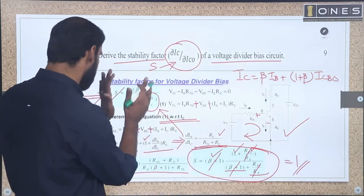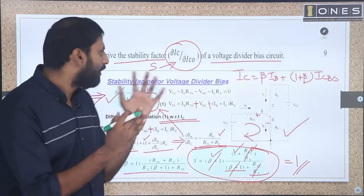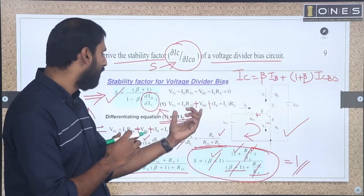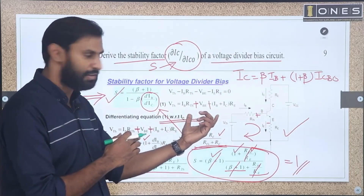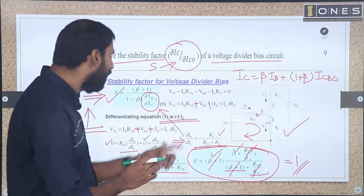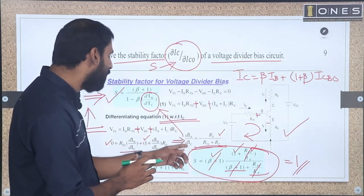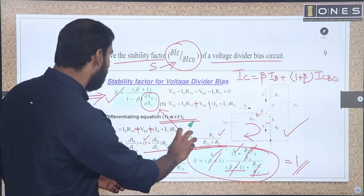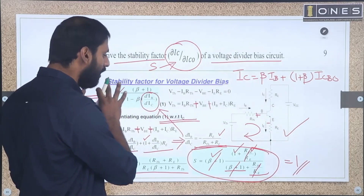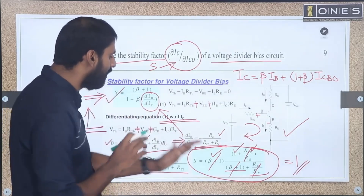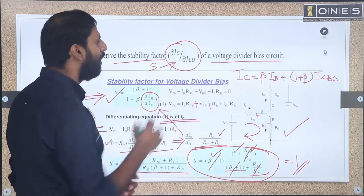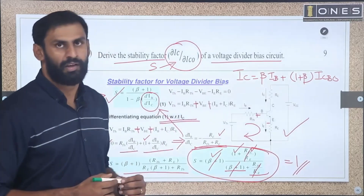To summarize the derivation: start with the standard expression, then for the voltage divider bias circuit apply the KVL equation on the input side, differentiate with respect to IC to get dIb/dIc, then substitute into the standard expression to get the final stability factor.